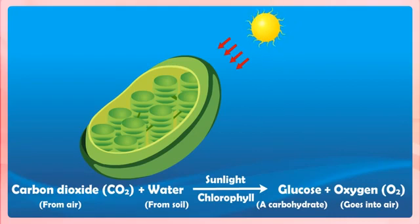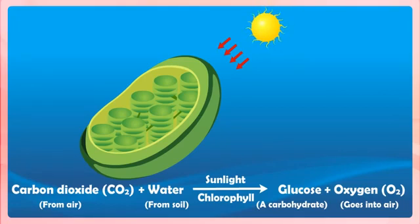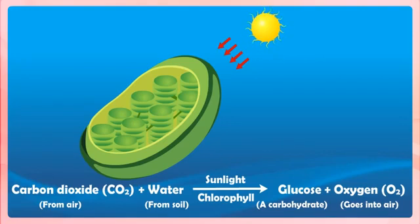So, when plants or animals utilize the food made by photosynthesis, they actually use the solar energy stored in it in the form of chemical energy. In this whole process, the plant releases oxygen.